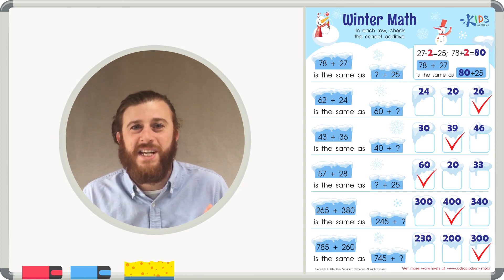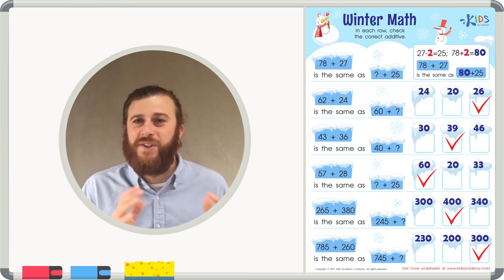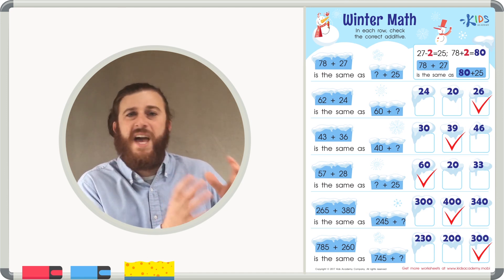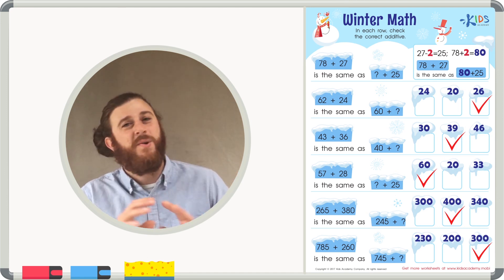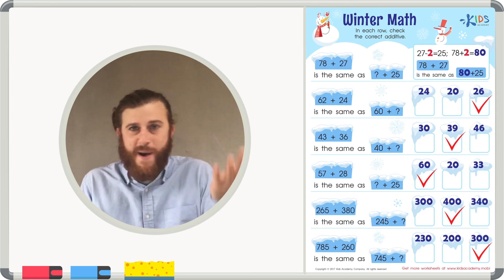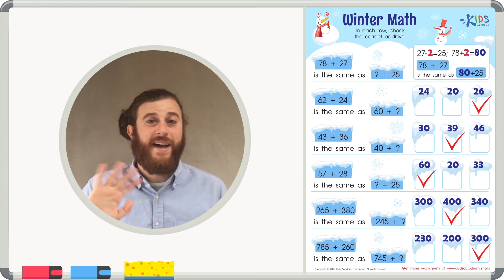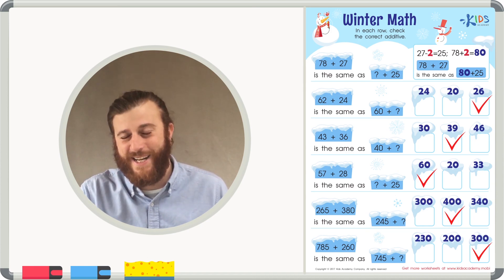Remember, when you're trying to make problems easier, try to go to a 5 or a 0 in the ones place. Whatever you do to the first number, whether it's adding or taking away, you have to do the opposite to the other number to balance the equation. Then you'll have an easier problem to solve. Thanks for watching, boys and girls. See you next time.